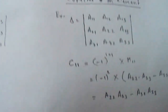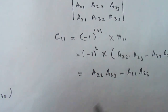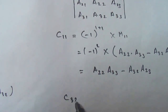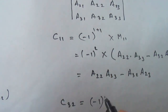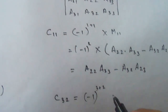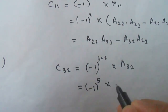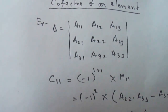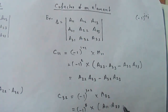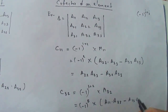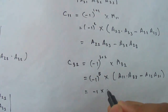Now let us take another example — we will calculate the cofactor of a32. We write c32 = (−1)^(i+j) × m32. Here i = 3 and j = 2, so the exponent is 3 + 2 = 5. Thus c32 = (−1)^5 × m32. The minor m32 is |a11 a13 / a21 a23|, which expands to a11 × a33 − a13 × a31.